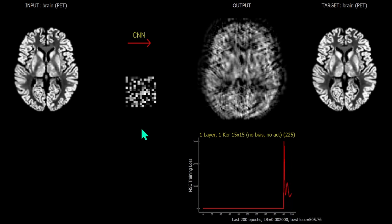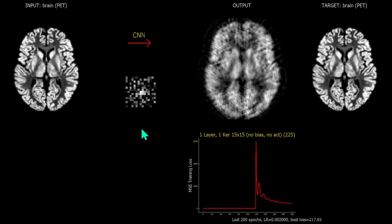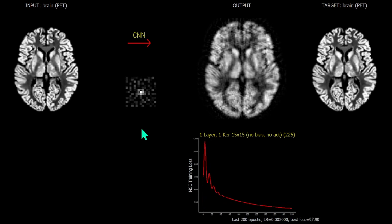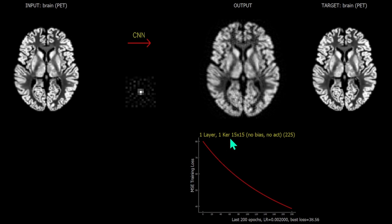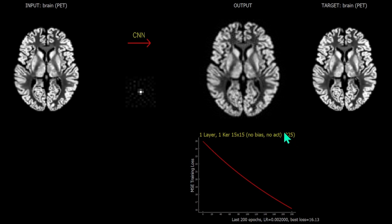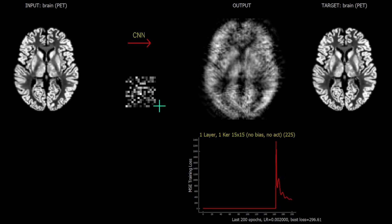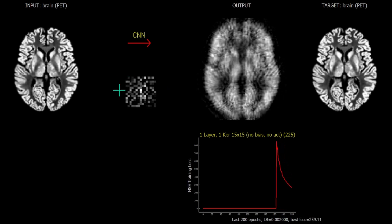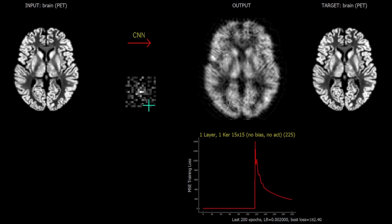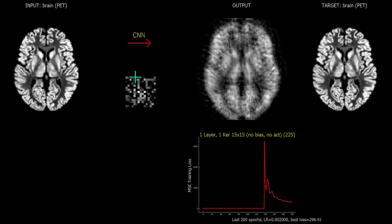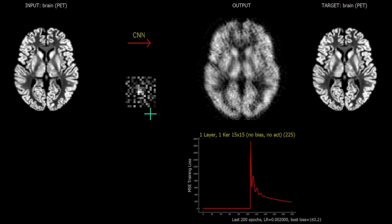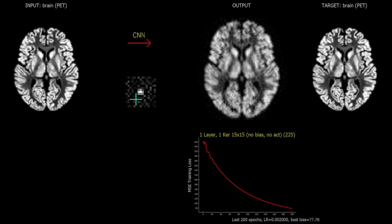In this video I want to look at a very simple convolutional neural network which has only one single layer and one single kernel of size 15 by 15. There is no bias, no activation — just 225 parameters in that 15 by 15 kernel, which is shown here. As I speak, I am randomly reinitializing that kernel to show what happens when it is convolved with an input image.